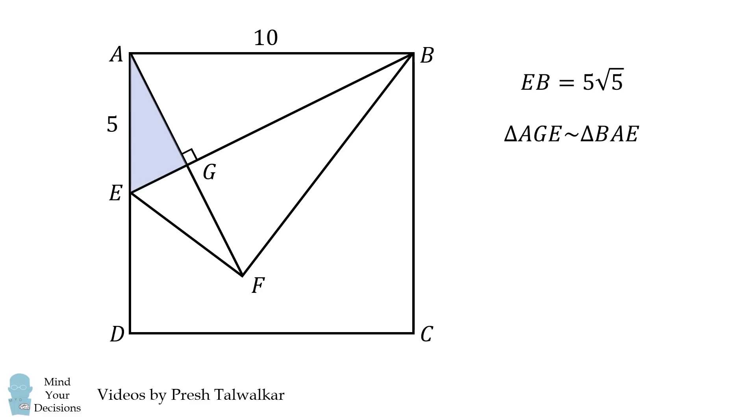From here, triangle AGE must be similar to triangle BAE. These are both right triangles that share an equal angle. Therefore, we can equate the ratio of the hypotenuse to the longer side. This means EA over AG is equal to EB over BA. We substitute in the values and then we solve for AG. We simplify to get AG is equal to 10 divided by the square root of 5.